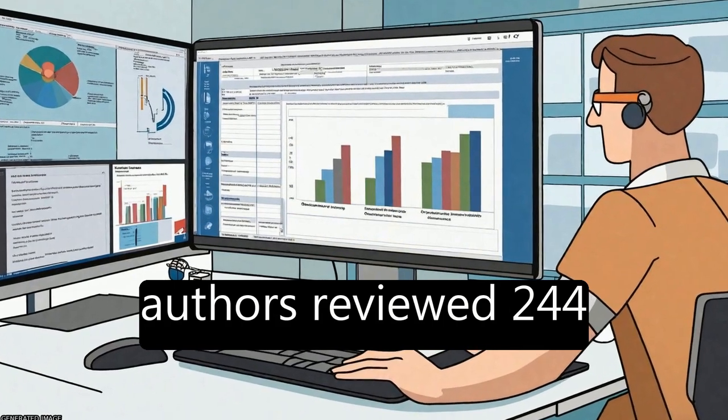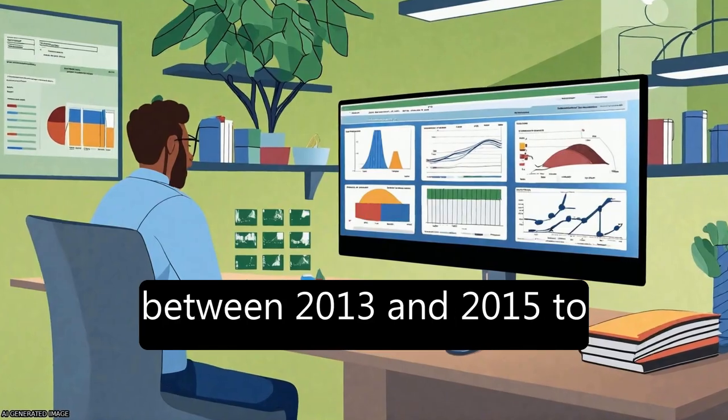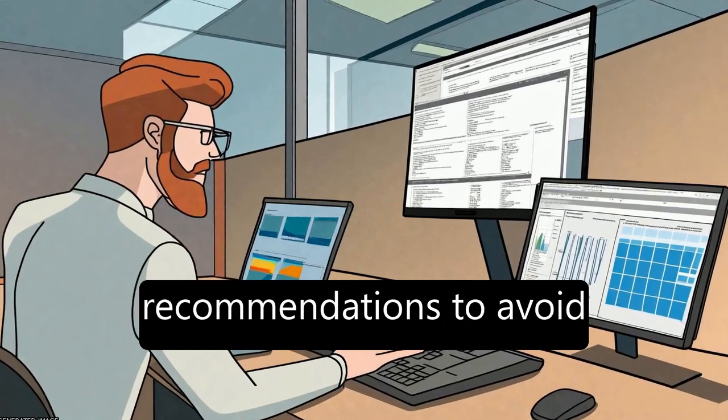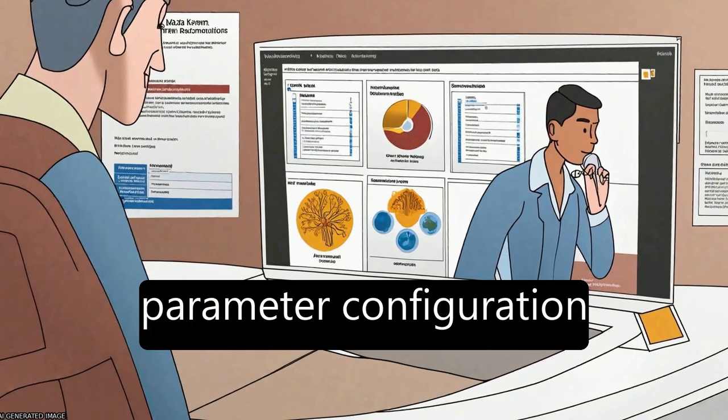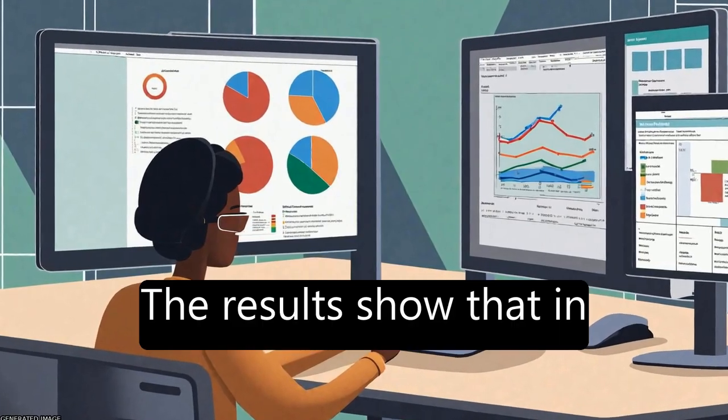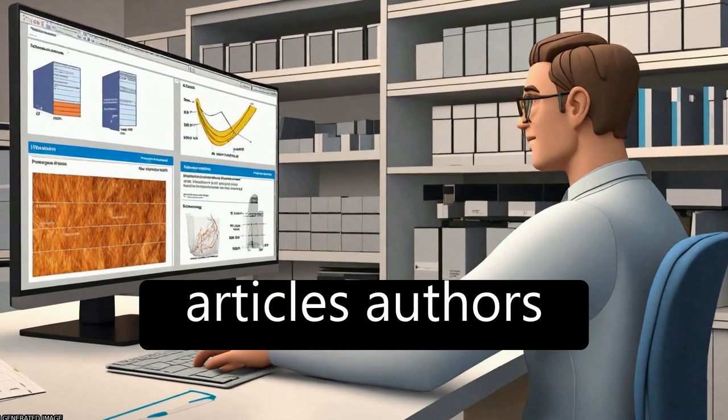In this work, the authors reviewed 244 articles published between 2013 and 2015 to assess whether researchers are following recommendations to avoid using the default parameter configuration when dealing with small sample sizes. The results show that in only 16% of analyzed articles